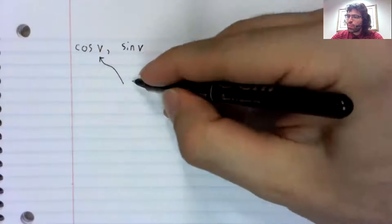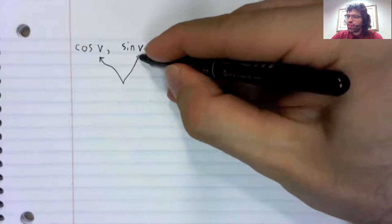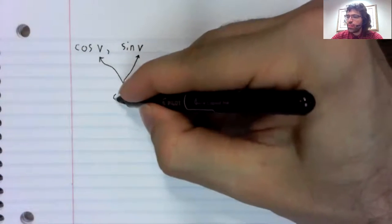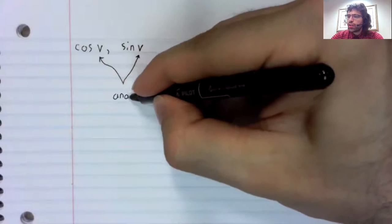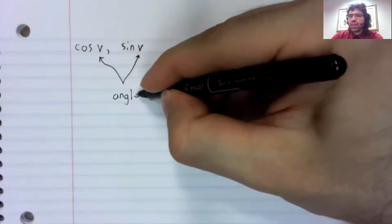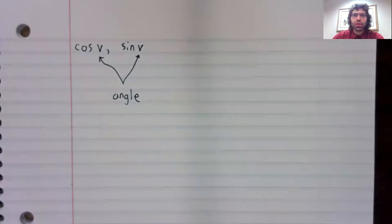And for the purposes of our definition, we are going to think of v as an angle. Although you certainly take the cosine and sines of things that aren't angles.